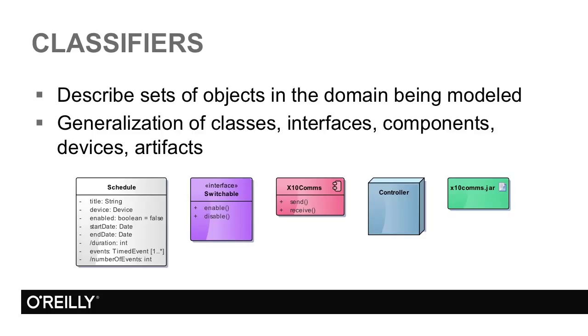If you're familiar with the object-oriented concept of inheritance, they're all subclasses of the metaclass classifier. You won't ever see a classifier in a diagram because it's an abstract class, but anything that classifies a set of instances of things in the domain is a classifier. The reason for mentioning it is that a lot of the subclasses of classifier have features in common that they share because they are subclasses of classifier.